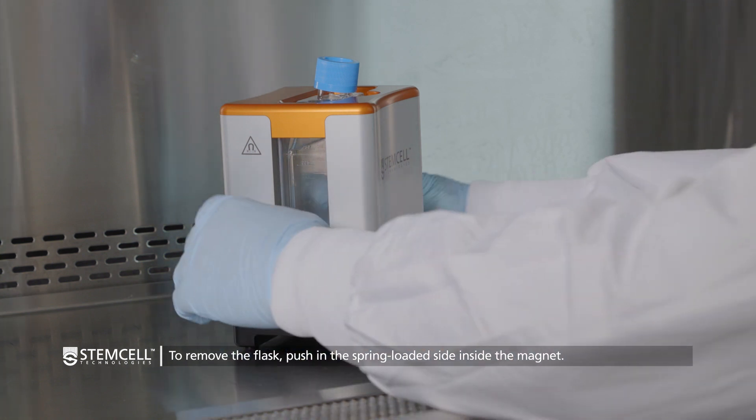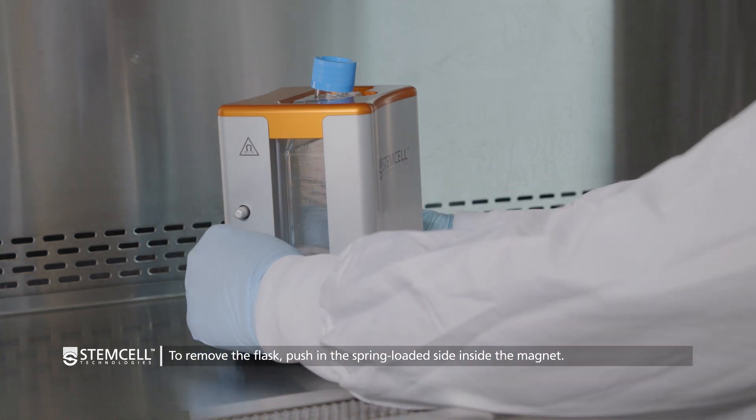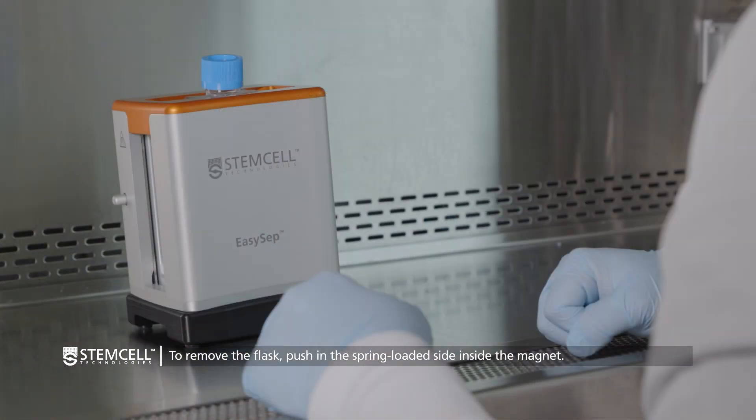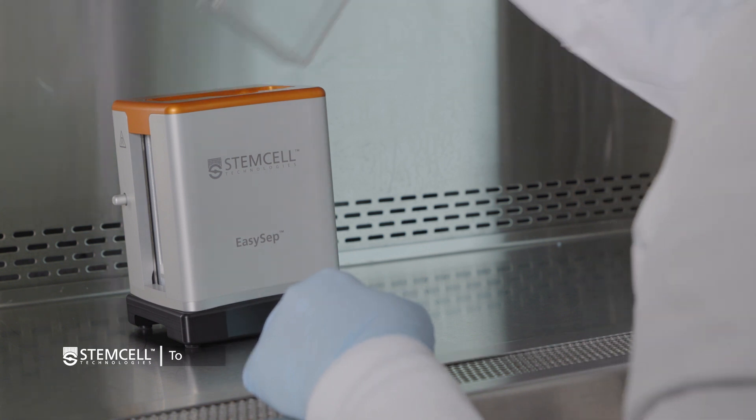To remove the T75 flask from the magnet, push in the spring-loaded side inside the magnet. You can now safely retrieve the flask.